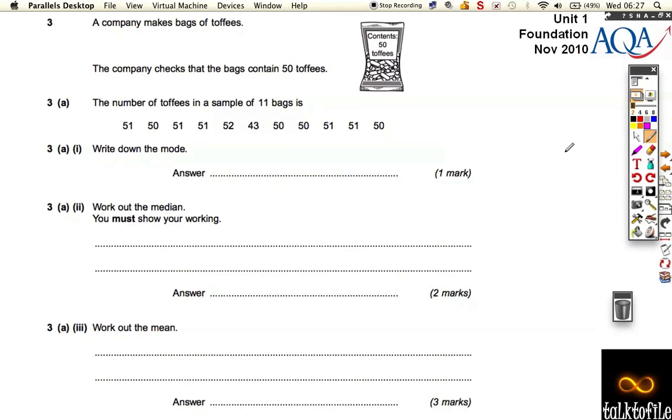Still on the November 2010 paper, which is question 3 and it's about toffees. This company makes toffees, here's a little picture in case you didn't know what a bag of toffees looks like. They take a sample of 11 bags, so when they make them they just pick out 11 bags and count the toffees in each bag.